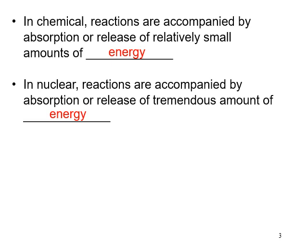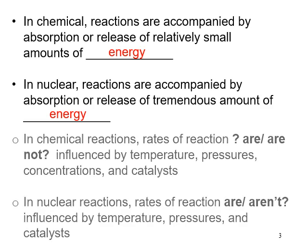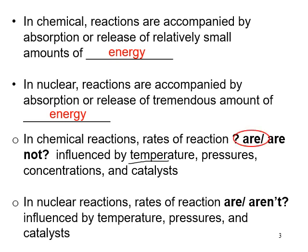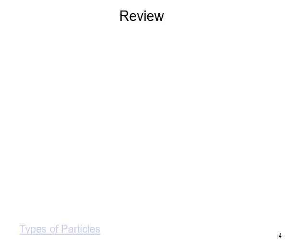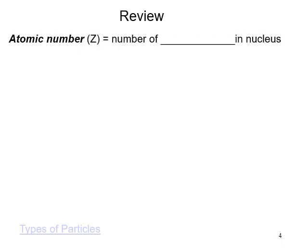That's why they need a lot of material like uranium or plutonium to cause a big explosion. In chemical reactions, rates are influenced by temperature, pressure, concentration, and catalysts, whereas in nuclear reactions they are not influenced by any of these things — a radioactive nucleus just decays at a certain rate no matter what.